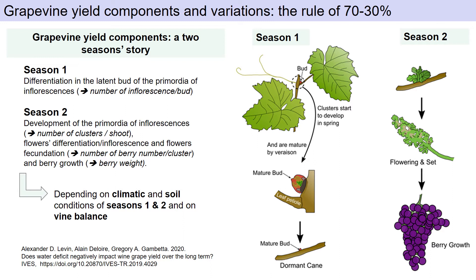Grapevine yield components, as you know, is a two-year story. During the first year, within the latent bud, the differentiation of what we call the primordia of inflorescences did occur. And then you have winter, you have dormancy, and dormancy needs to be released.